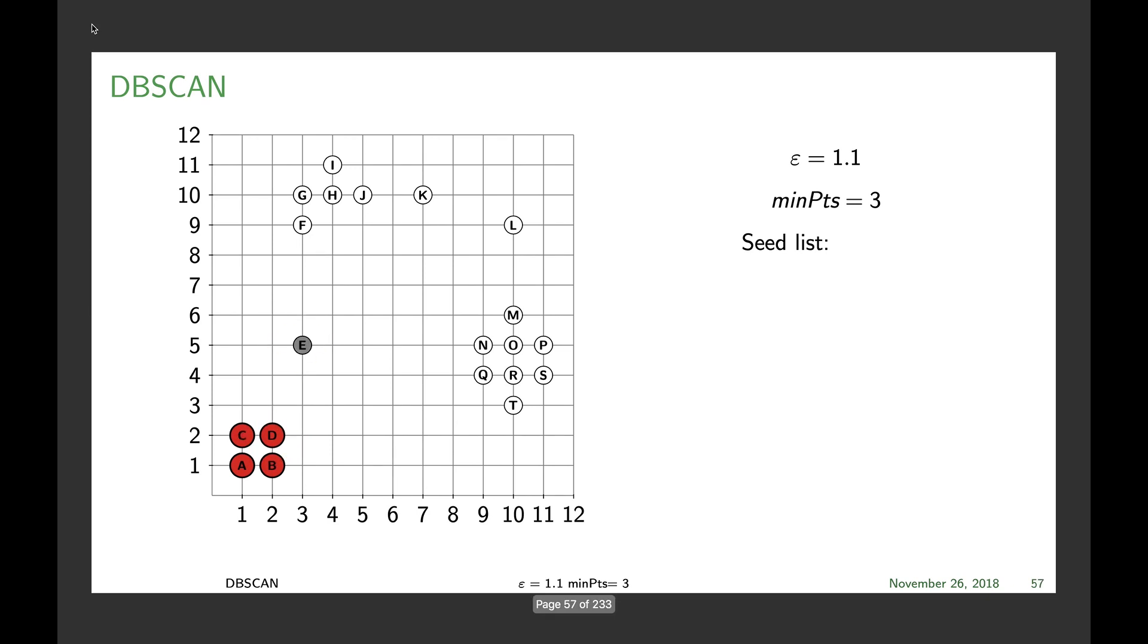E remains a noise point. F becomes a noise point for the moment. We then check G, see G is a core point and therefore change F to a border point. Check H which is also a core point, then check J which becomes a border point and I which becomes a border point.